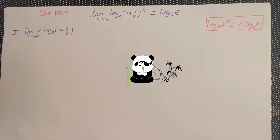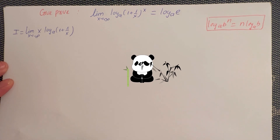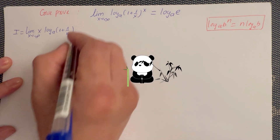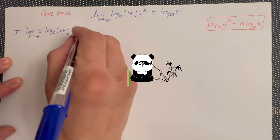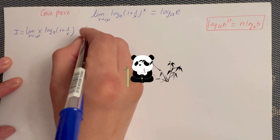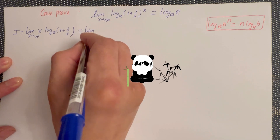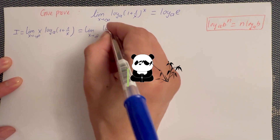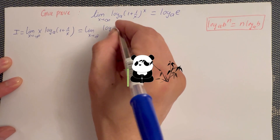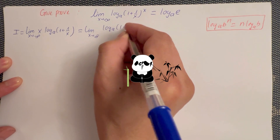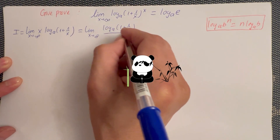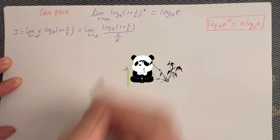You can rewrite one more time — you put x under the denominator. So you get the limit of log A of 1 plus 1 over x, all over 1 over x.